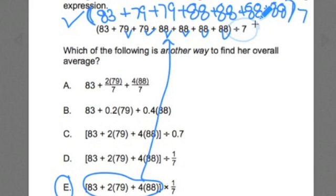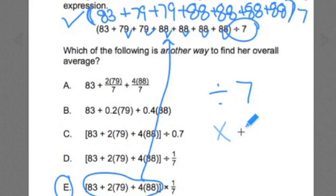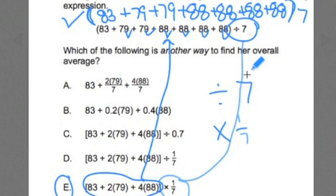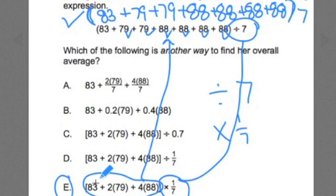Now, when you're dividing by seven, whenever you divide by a number it's the same as multiplying by the reciprocal. The reciprocal in this case — since seven is seven over one — the reciprocal would be one-seventh. So when I'm dividing by seven, it's the same as multiplying by one-seventh. So this right here is the exact same as dividing by seven. We've matched up the different parts of each expression and can see that they're both equal, meaning they're both going to get us the same answer.